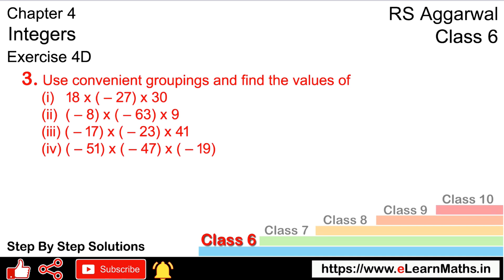Let's do question number 3 of exercise 4D on integers. Question 3 is: use convenient grouping and find the values of the following. First part is 18 × (-27) × 30.